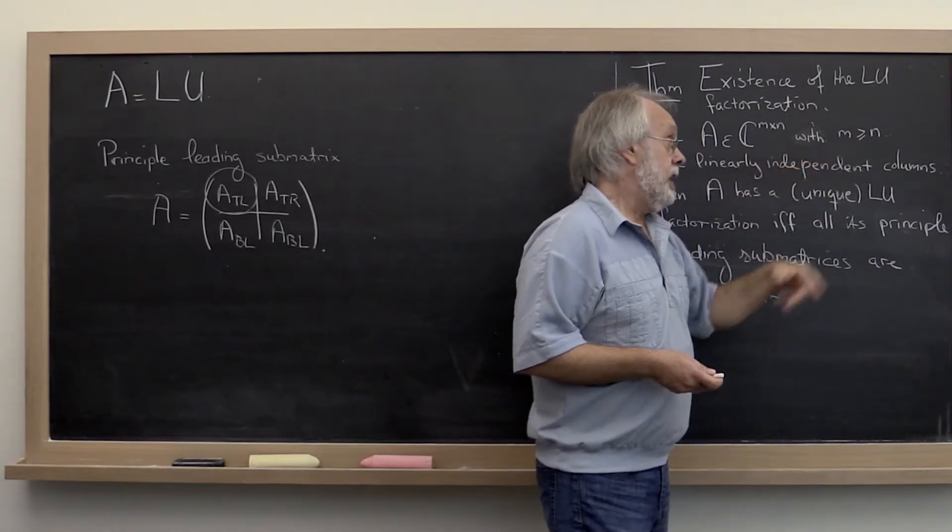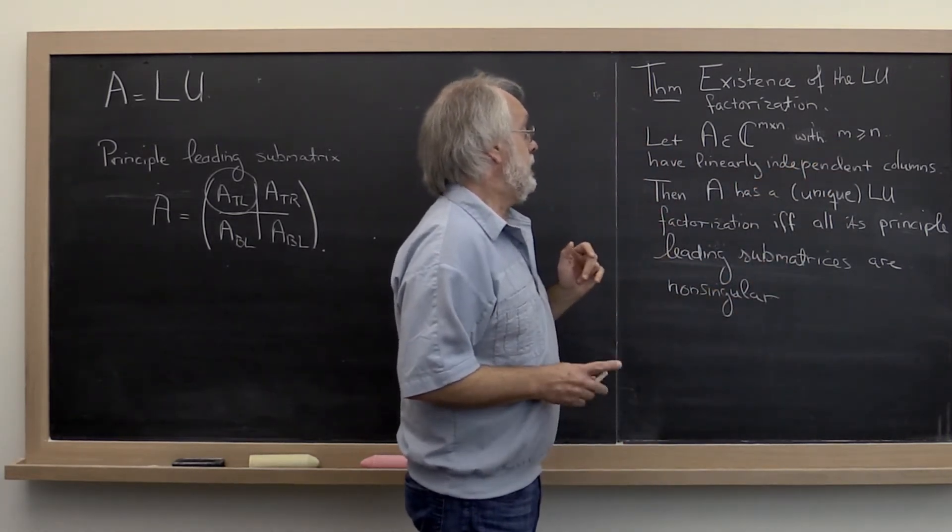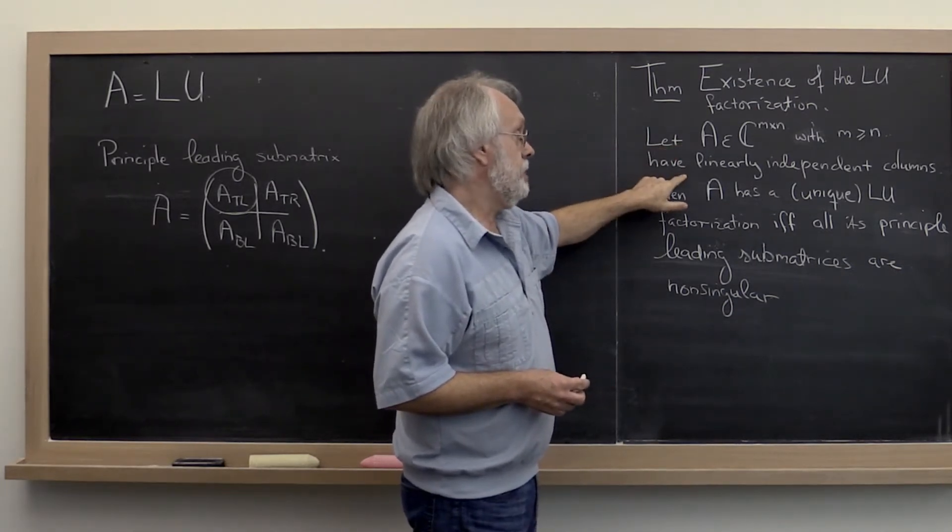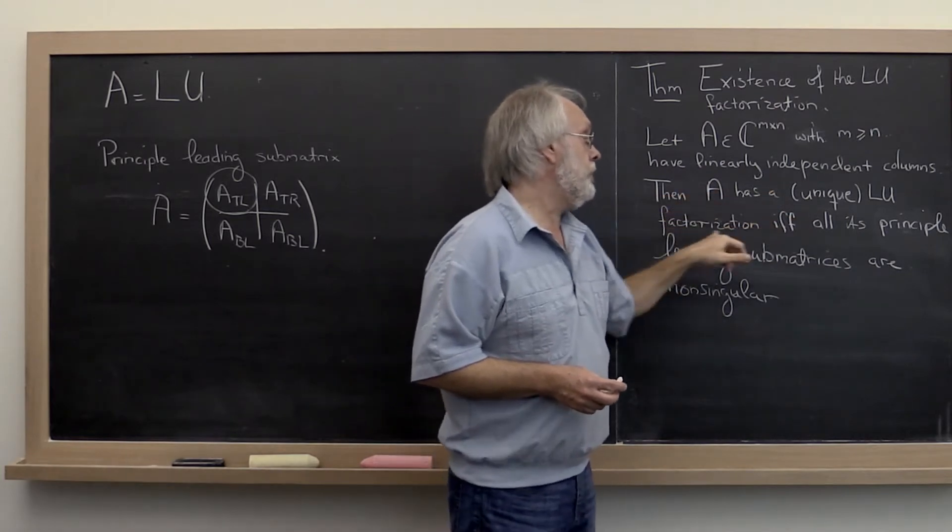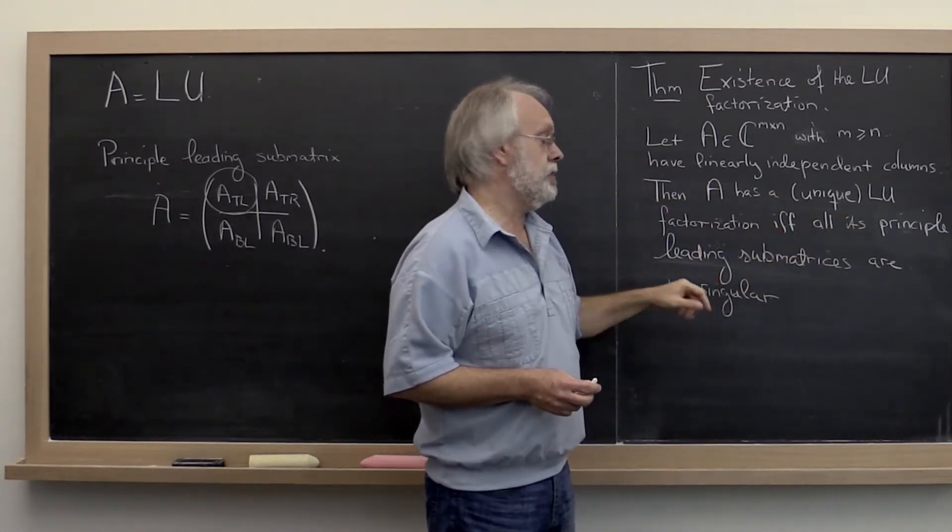m is greater than or equal to n, so fewer columns than rows, or at most as many columns as rows, with linearly independent columns. Then A has a unique LU factorization if and only if all of its principal leading sub-matrices are non-singular.